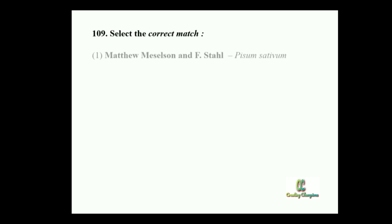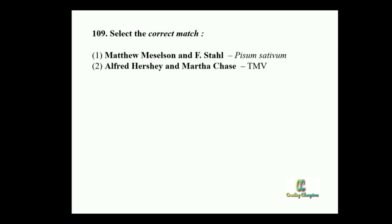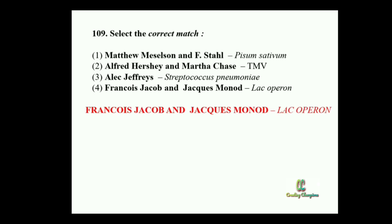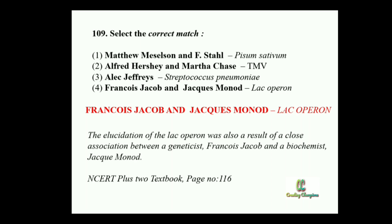Next question: Select the correct match. Option 1: Matthew Meselson and Franklin Stahl — Phage Satyavati. Option 2: Alfred Hershey and Martha Chase — Tobacco mosaic virus. Option 3: Alec Jeffries — Streptococcus pneumoniae. Option 4: François Jacob and Jacques Monod — lac operon. The answer is François Jacob and Jacques Monod — lac operon. Matthew Meselson and Franklin Stahl proposed semi-conservative DNA replication in E. coli. Alfred Hershey and Martha Chase proved DNA as genetic material. Alec Jeffries proposed the DNA fingerprinting technique.